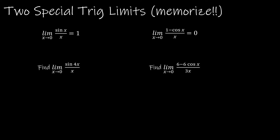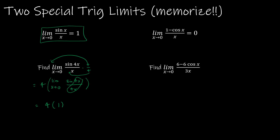For example, find the limit as x approaches 0 of sine of 4x over x. I can't plug in 0 directly. What I can do is multiply by 4 over 4. That gives me 4 times the limit as x approaches 0 of sine of 4x over 4x. Since the limit of sine u over u as u approaches 0 is 1, this limit equals 4 times 1, which is 4. I just had to multiply by 4 over 4 — which is 1 — to make it easy to solve.